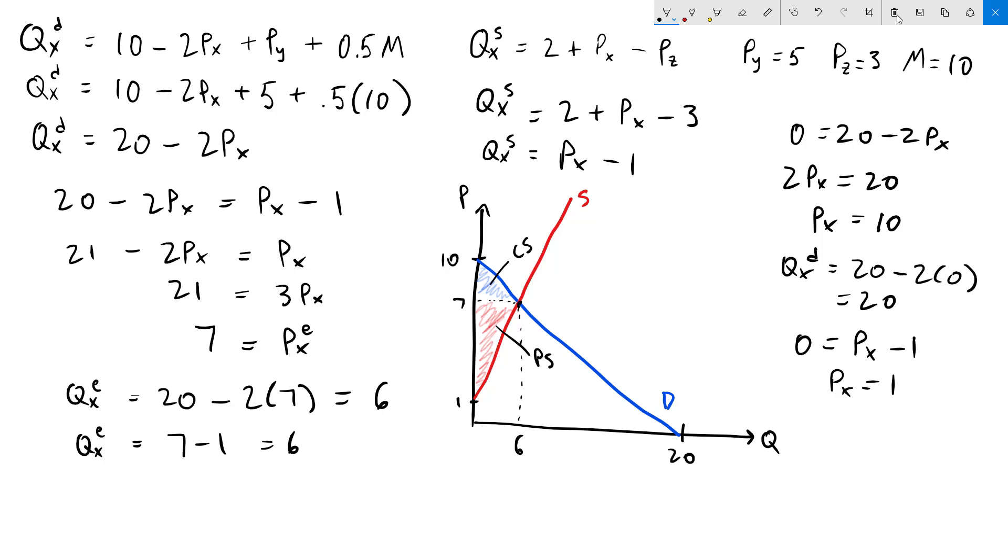To calculate the consumer and producer surplus, we note that these are triangles. So the area is one-half base times height. For the consumer surplus, we have one-half base of 6 and a height of 10 minus 7, of course is 3, which comes out to an area of 9.